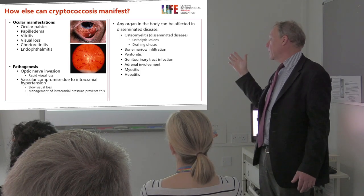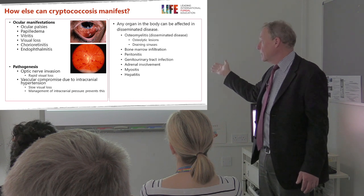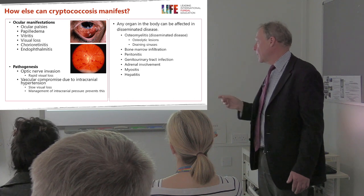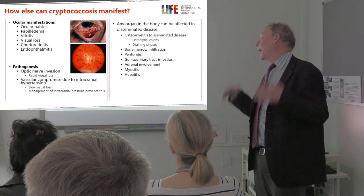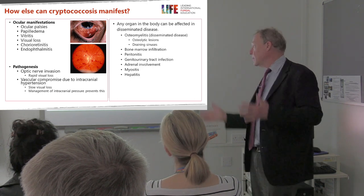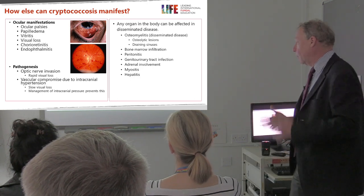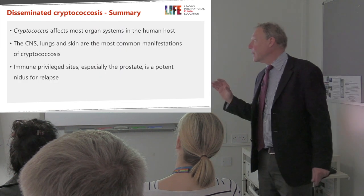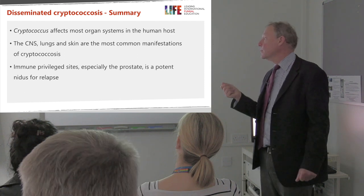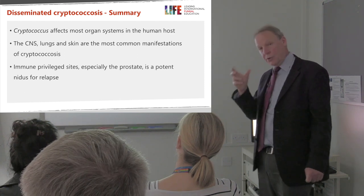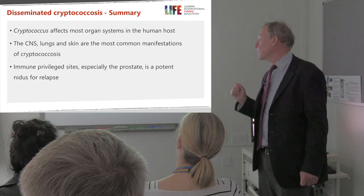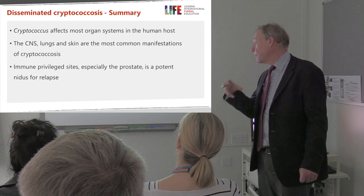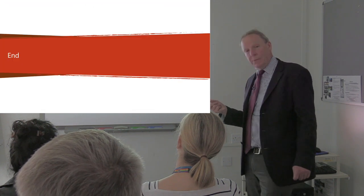Outside the eye, skin, brain, and lungs, you can get osteomyelitis, bone marrow involvement, peritonitis, other parts of the genitourinary tract, occasionally adrenal involvement, myositis, and hepatitis — all rare but part of a disseminated illness. In summary, cryptococcus affects most organ systems in the human host. The lungs and brain are the most common sites, the skin is the third most common site, and some immune-privileged sites such as the prostate are a potential nidus for relapse.